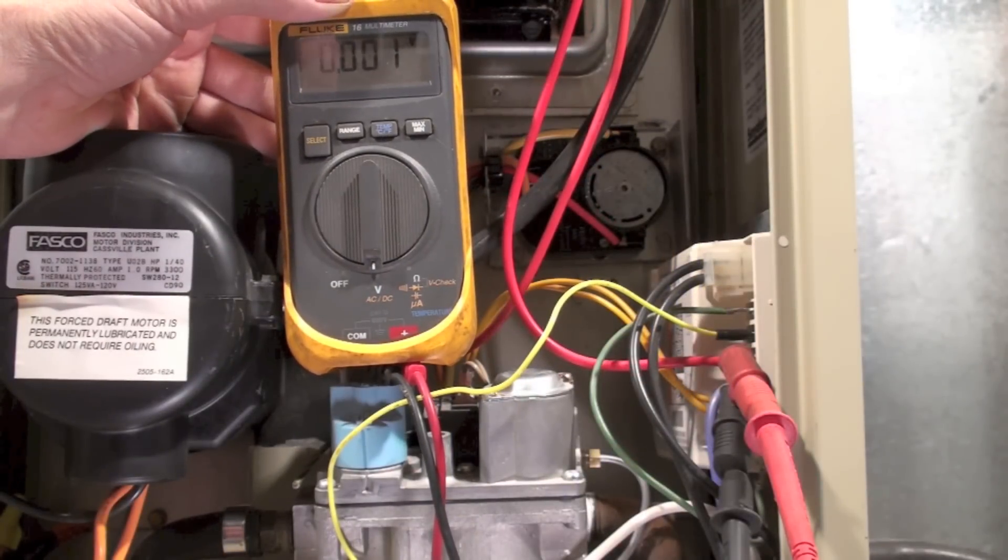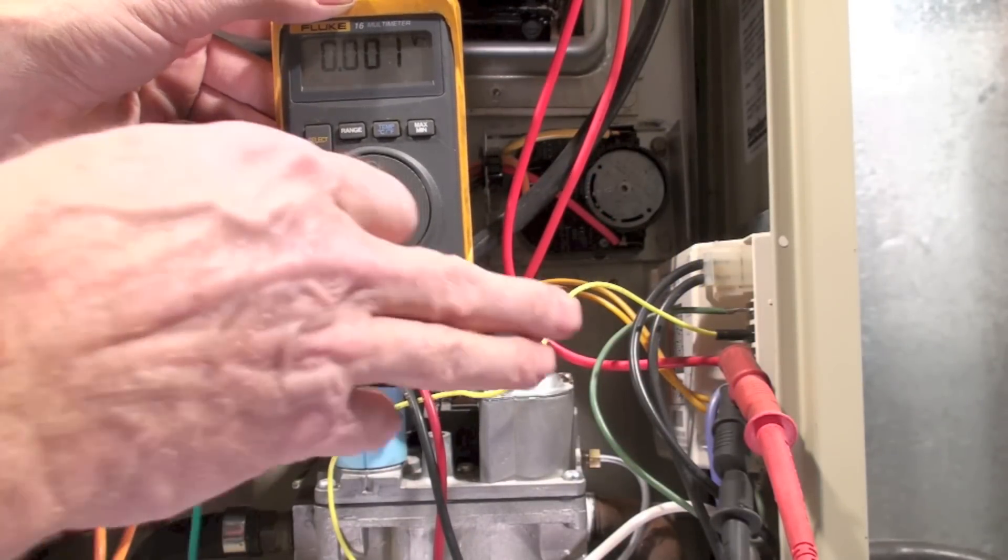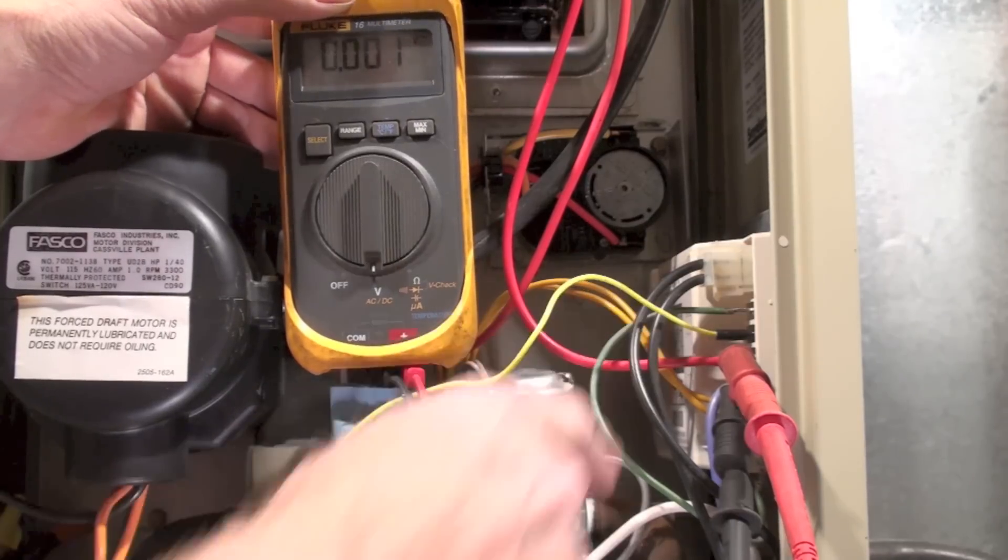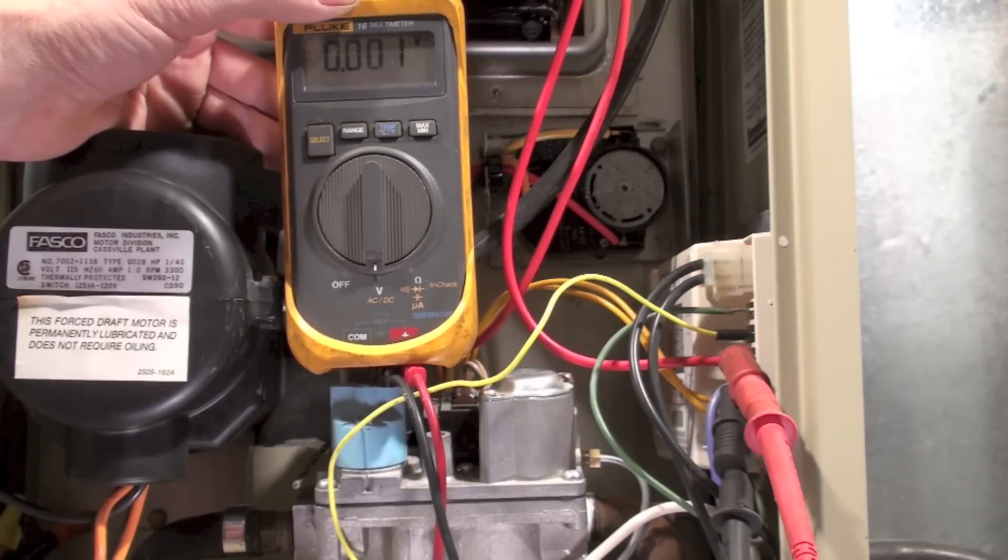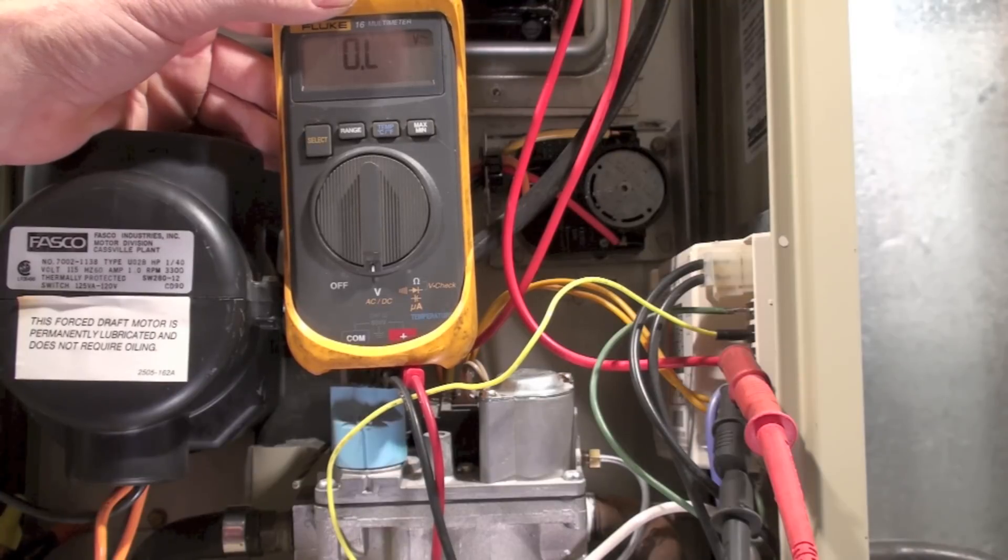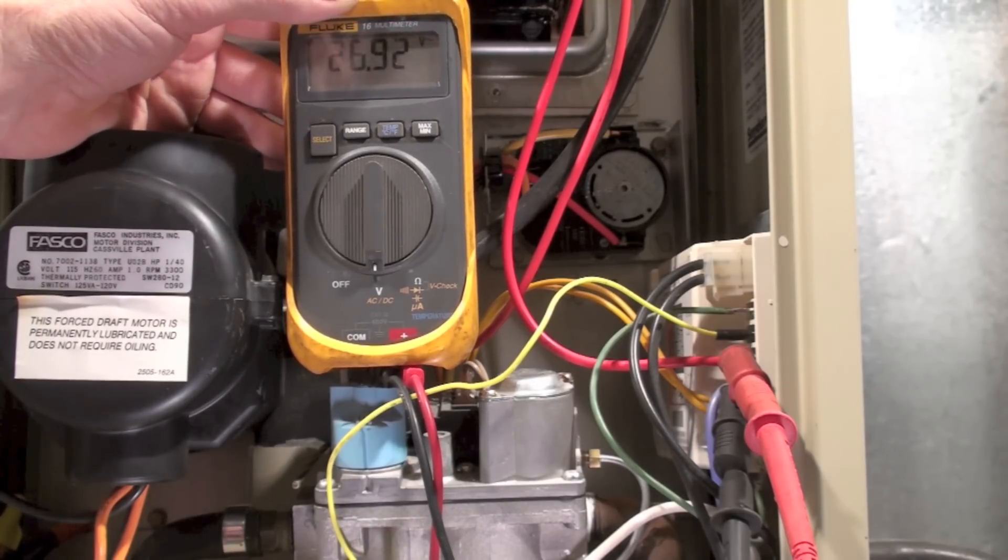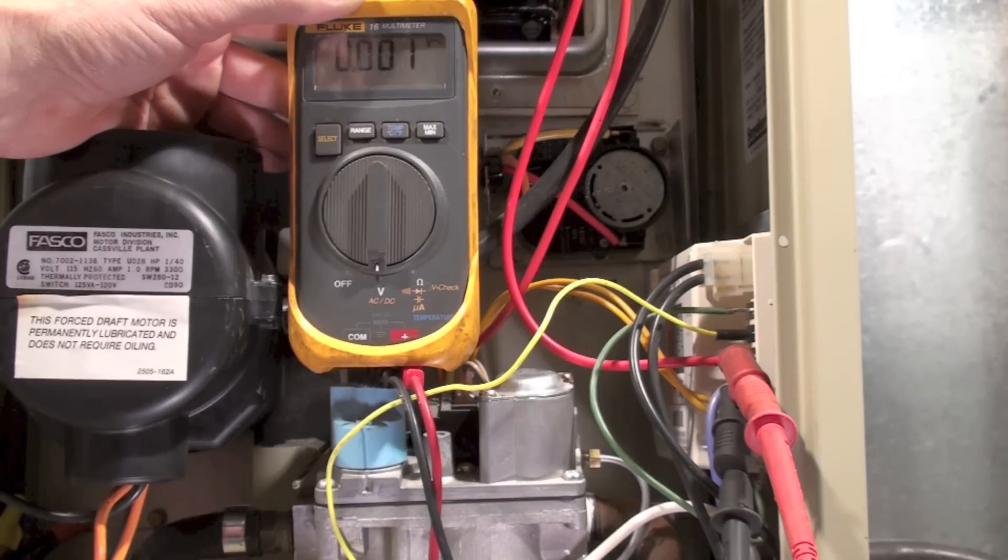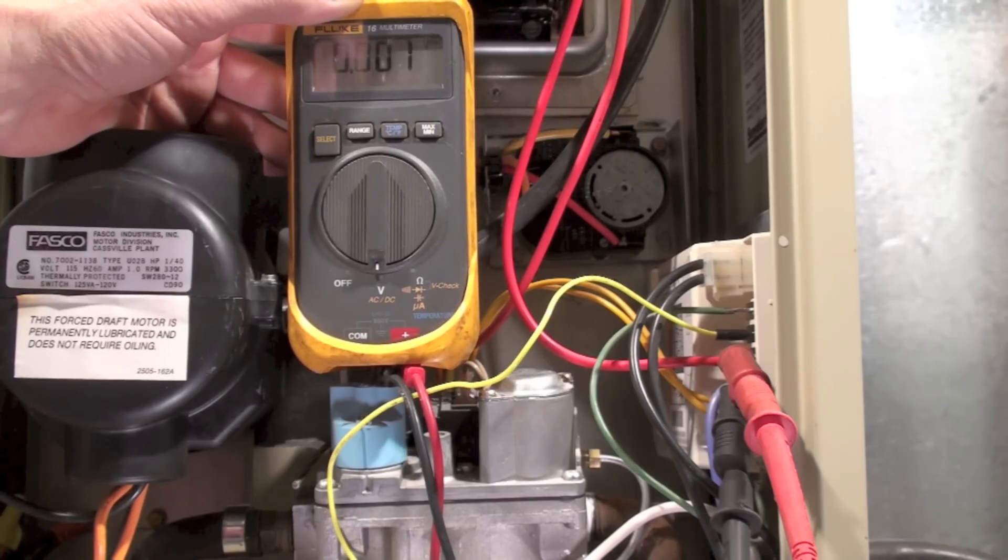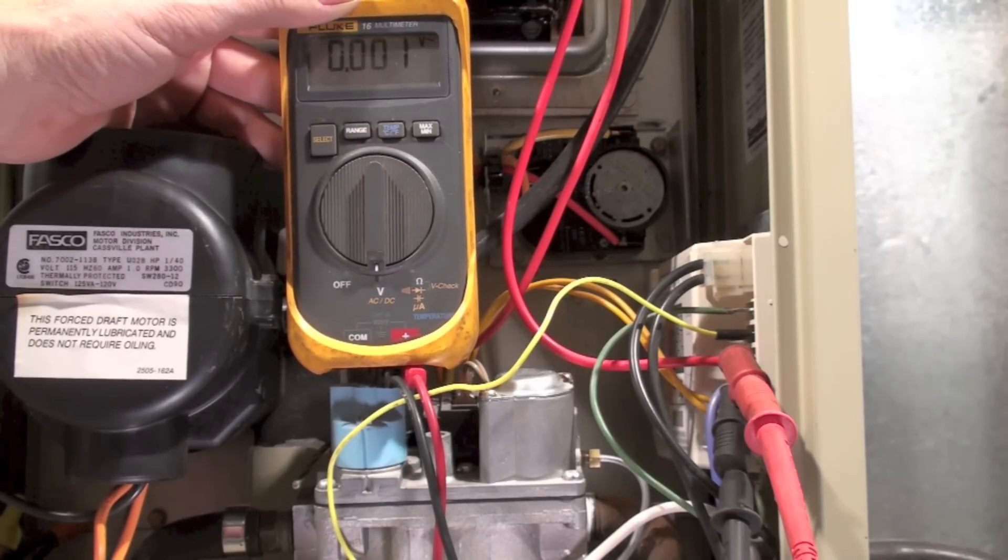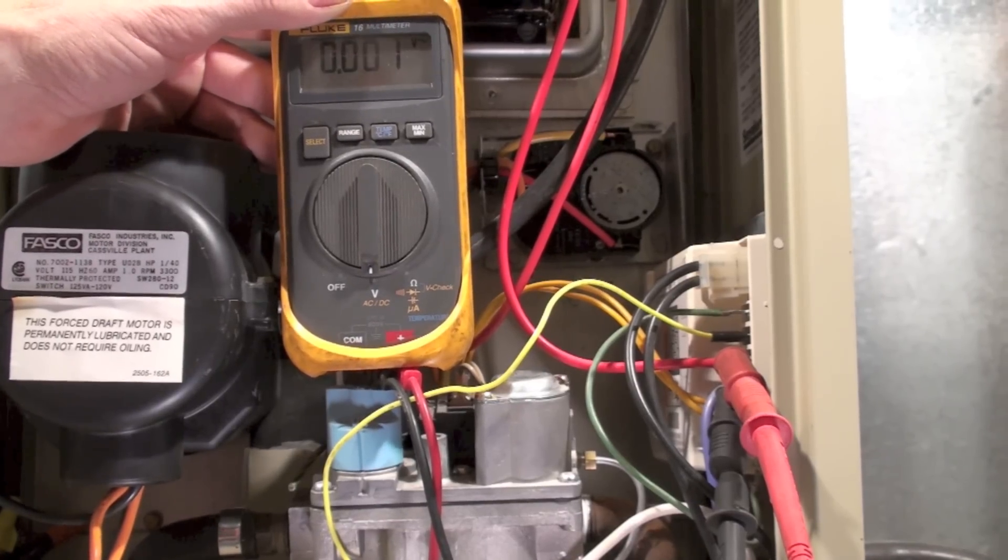Okay, here I've got the probes mounted between TH and TR on the controller, right in there, and I'm going to start this up. Okay, I went to where there's power and then the power went away. Okay, that's pretty much a dead giveaway that you've got a pressure switch problem. Now let's take a look at that pressure switch.